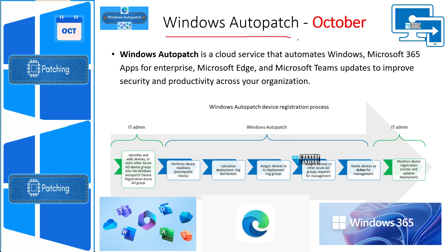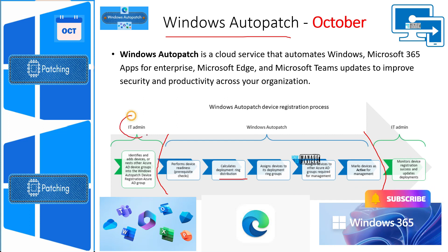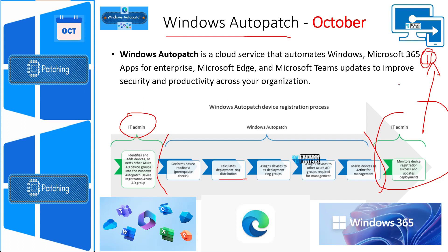Now let's look at Windows Auto Patch — the automated patch management service provided by Microsoft. As shown in the flow diagram, Microsoft manages device readiness and deployment ring distribution, so you don't need to create deployment rings yourself. This is end-to-end automation of Patch Tuesday — Microsoft handles everything from their side. However, there are some caveats, which are discussed in detail in a separate video accessible via the 'i' button in YouTube.